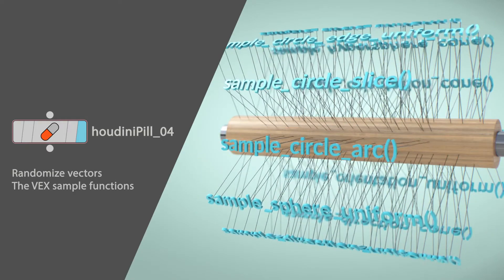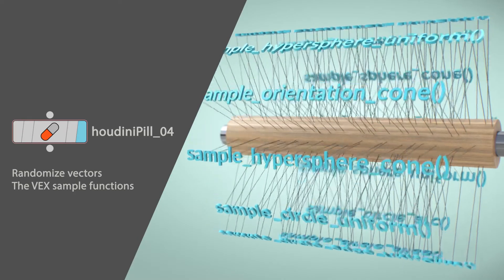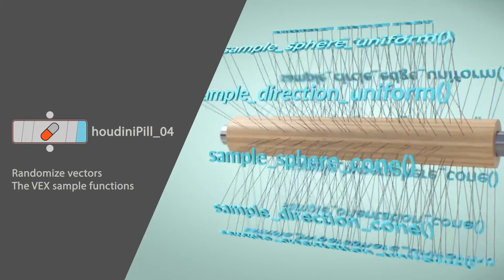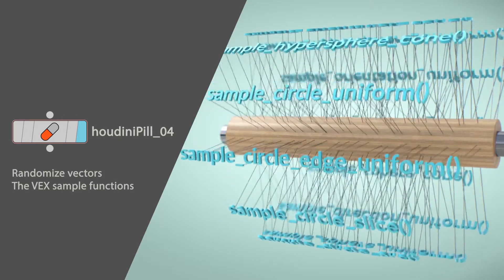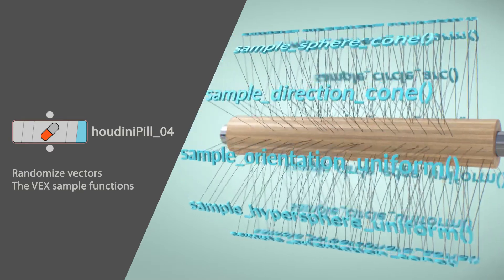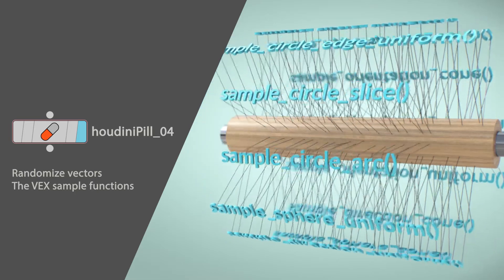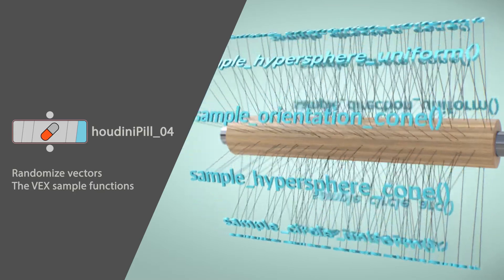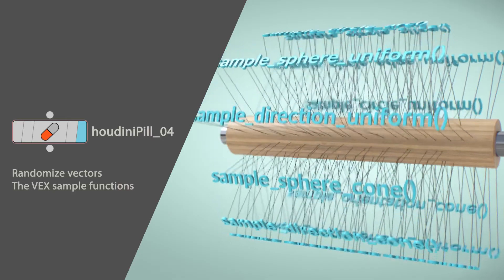Hello everyone. This WinniePill is going to be a little bit different — more like an overview of a certain set of VEX functions: the sample functions. These are many times overlooked and are very powerful vector randomization functions. Many times you just use a rand function, and that can be not enough in some situations, because it ranges from 0 to 1 and there's a lack of control. To make what we want, we have to write long and complex code. So let's take a look at these functions.